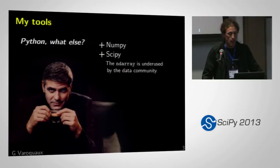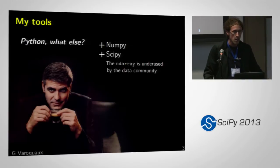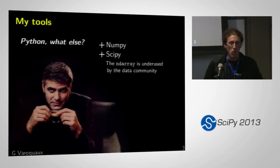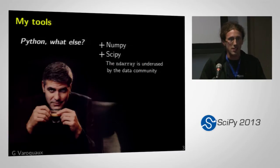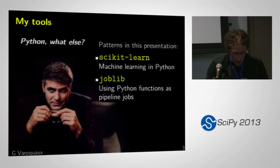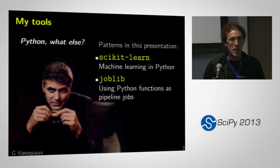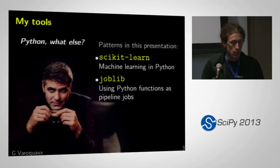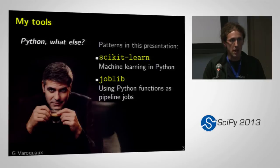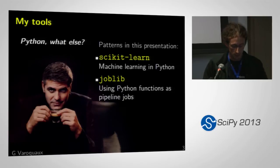In my experience, the data community does not use the NDArray enough. I think it's changing — we can see it here — but I talk to people in the data community and they say, 'I have text, you're using NumPy arrays, how do I match this?' I'll be talking about patterns, not focusing on the libraries themselves. You can come to the tutorials or look at the documentation. All these patterns are implemented in scikit-learn, joblib, and many other libraries.